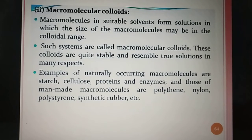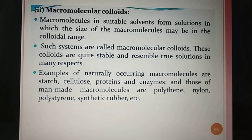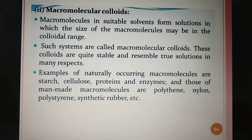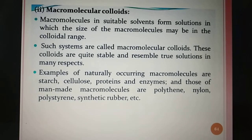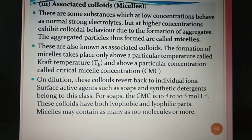The second type is macro-molecular colloids. Macro-molecules in suitable solvents form solutions in which the size of the macro-molecules may be in the colloidal range. Macro-molecules are substances having big-sized molecules in which the dispersed phase particles have size in the range of colloidal particles. They have very high molecular masses. Examples of naturally occurring macro-molecules are starch, protein, cellulose, enzymes, etc. Man-made macro-molecules include polythene, nylon, polystyrene, synthetic rubber, etc.